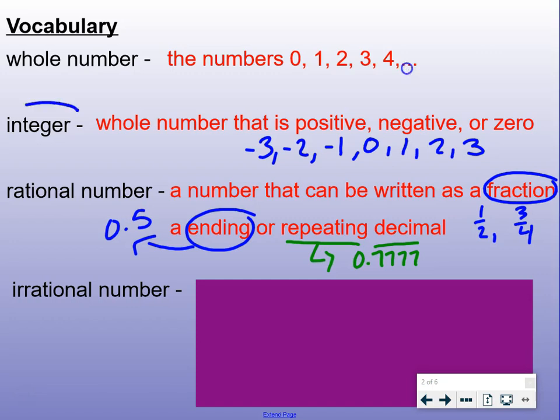Also, all integers are rational numbers. So all of these are both integers and rational numbers.